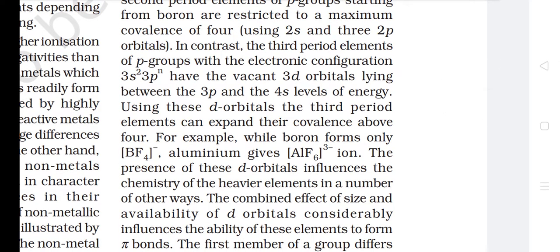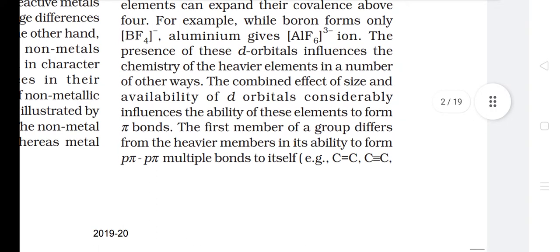In contrast, the third period elements of P-groups with the electronic configuration 3s to 3pn have the vacant 3d orbitals lying between the 3p and 4s levels of energy. Using these d orbitals, the third period elements can expand their covalence above 4. For example, while boron forms only BF4-, aluminum gives AlF6-3. The presence of these d orbitals influences the chemistry of the heavier elements in a number of other ways. The combined effect of size and availability of d orbitals considerably influences the ability of these elements to form pi-bonds. The first member of a group differs from the heavier members in its ability to form p-pi–p-pi multiple bonds to itself, e.g. C=C, C≡C, N=N.